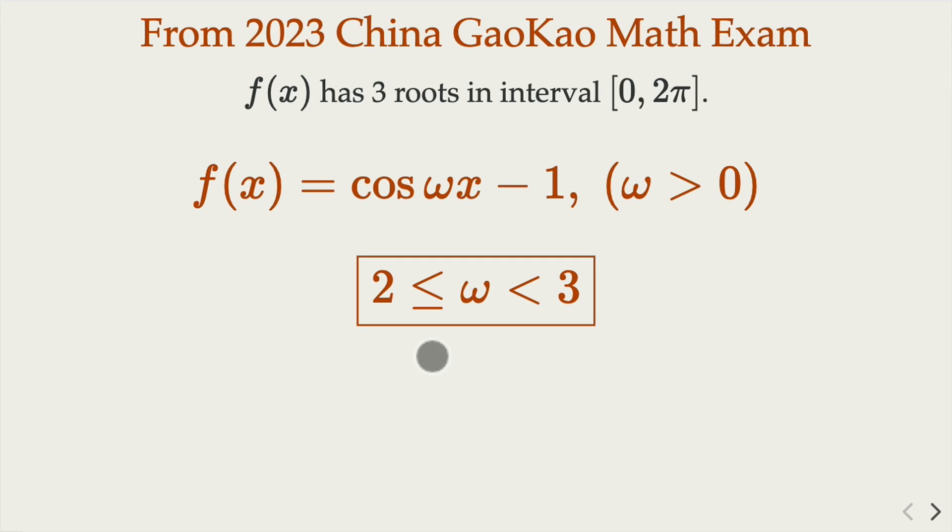The answer is ω has to be greater than or equal to 2 and less than 3. Notice you need to make the boundary condition correct, because you cannot take value 3, that would give 4 solutions here. We're looking for 3 roots, so it has to be in this interval.